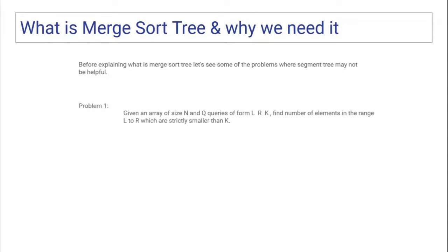The first problem is: you are given an array of size n and there are q queries. Each query is of the form l, r, and k — where l and r represent the range and k is an additional parameter. We have to find the number of elements in the range which are strictly smaller than k. Another variation of the same problem: how many elements in the range l to r are greater than or equal to k? Pause the video and try to think how you would implement this.